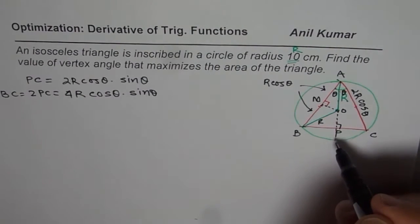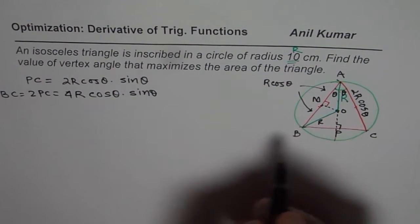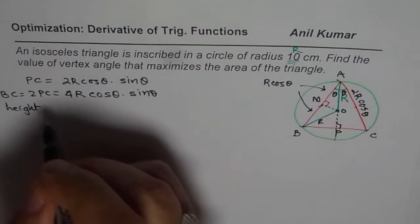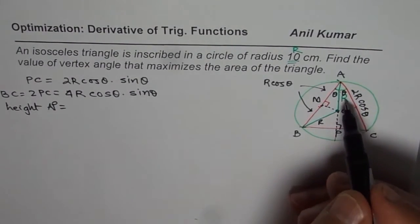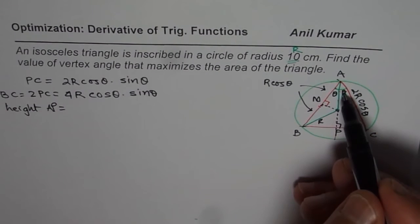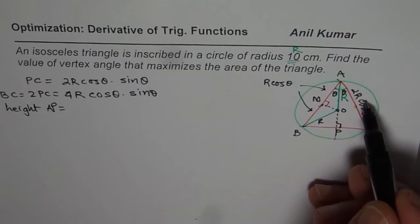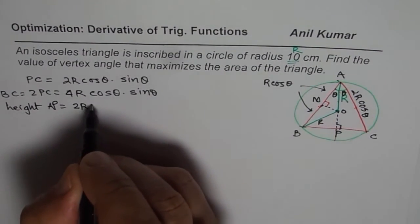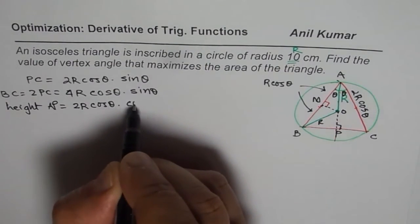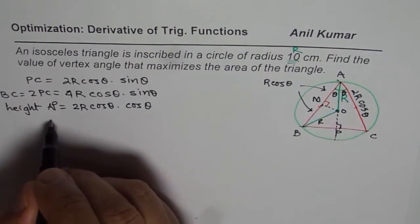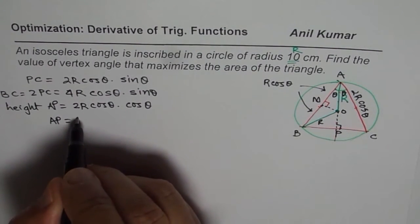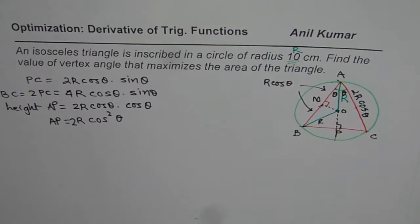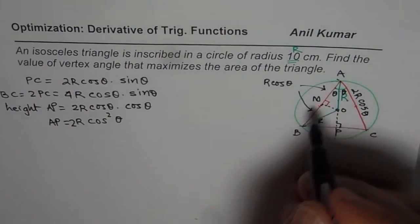Now let's find the height of the triangle. The height is AP, which is the adjacent side of angle theta in the right triangle with hypotenuse 2r·cos θ. So AP = 2r·cos θ · cos θ = 2r·cos²θ. We have done just enough to find the area of the triangle.